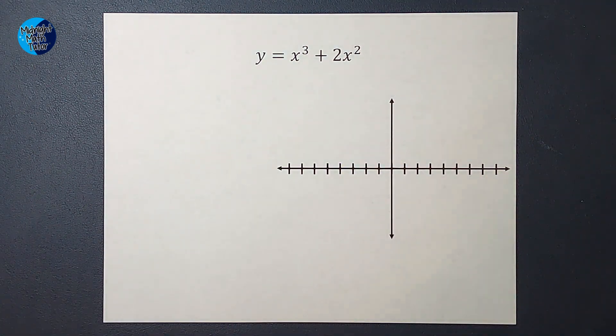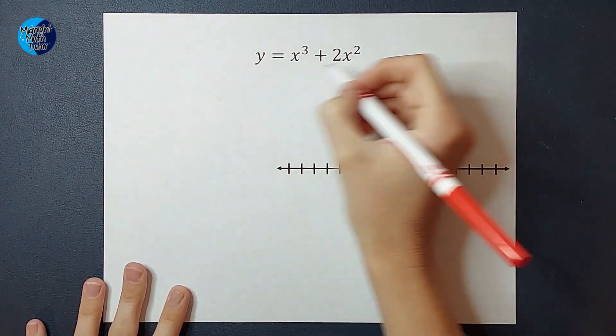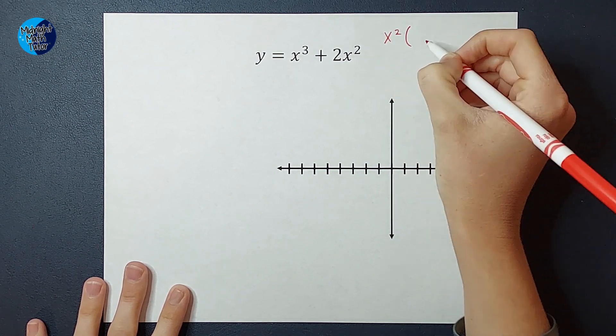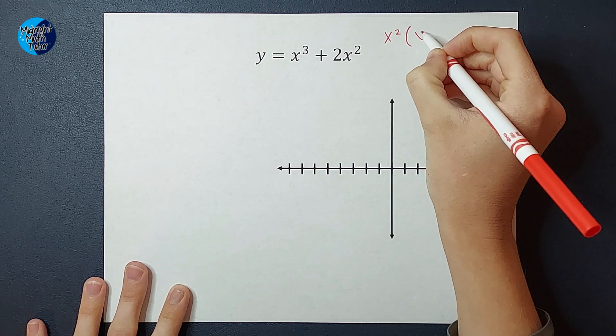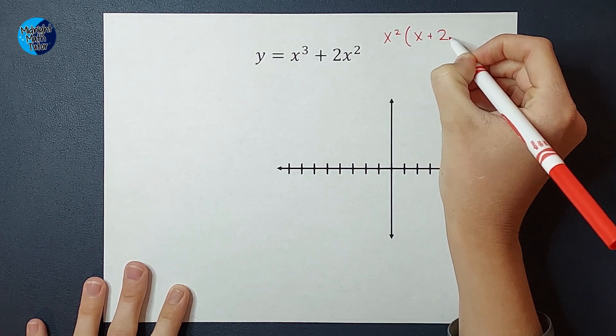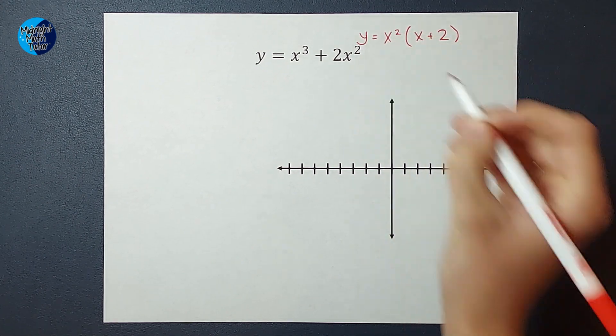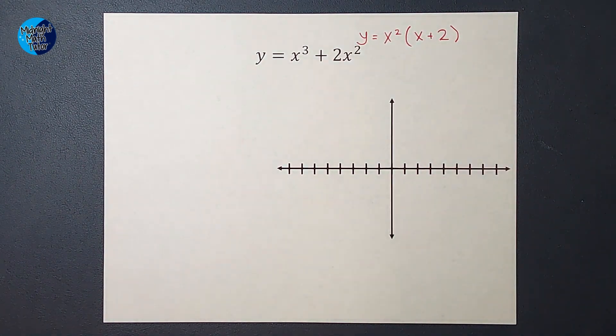I notice that I can pull out an x squared. I'm gonna write this over here, so I can pull out an x squared. When I pull that out, I'm left with x plus two on the inside. And that is looking pretty factored to me.